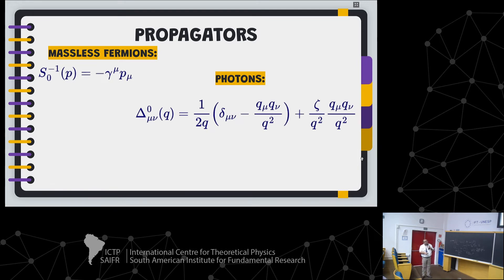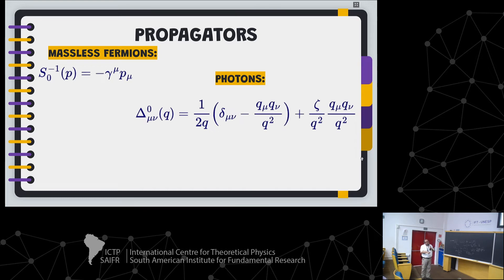There are some interesting features happening here. The dimensions are corrected if you add this setup with the corresponding dimensions. You need to have the same dimensions in these terms, and that is why the gauge-fixing parameter should be reinterpreted with respect to the gauge-fixing parameter of the theory we started with.